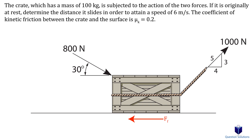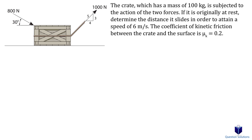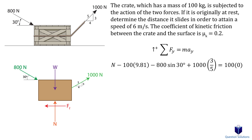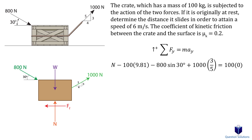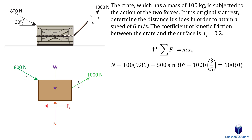The two forces will move the box to the right while the frictional force will try to slow it down. Our first step is to figure out the frictional force by drawing a free body diagram. We have the two forces, the weight, the normal force, and the frictional force. Writing an equation of motion for the vertical direction, and assuming forces upwards to be positive, we have the normal force, weight, and the y components of the two forces equal to mass times acceleration. Since the crate only moves along the horizontal axis, acceleration in the y direction is zero. We solve for the normal force, then calculate the frictional force as the normal force multiplied by the coefficient of friction.